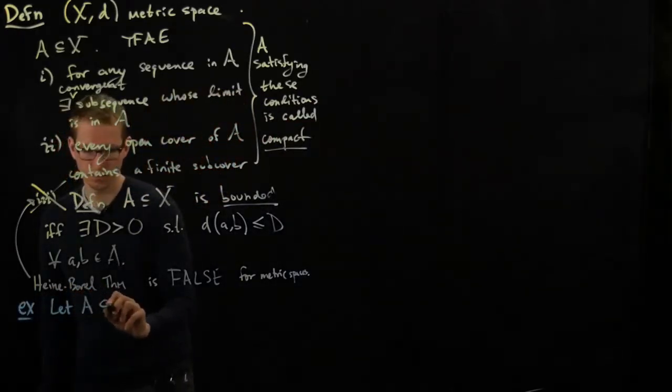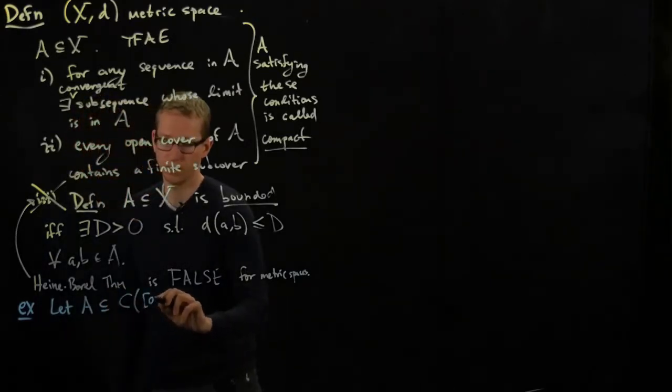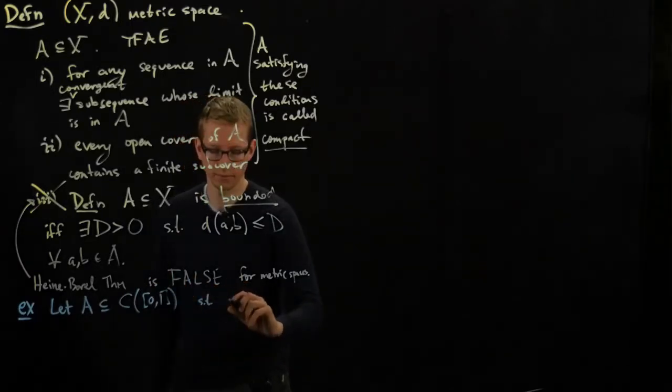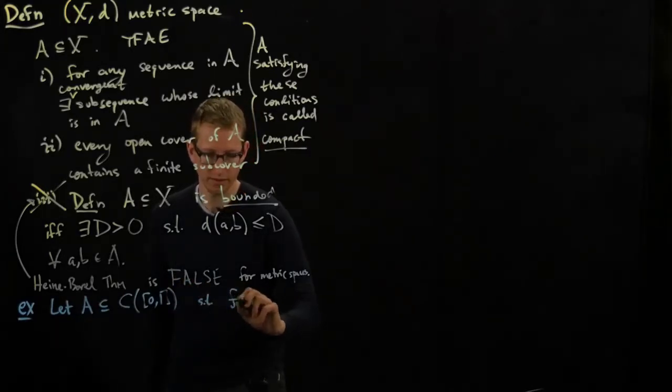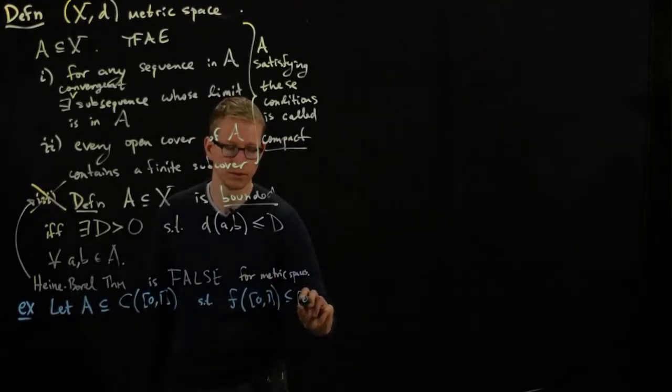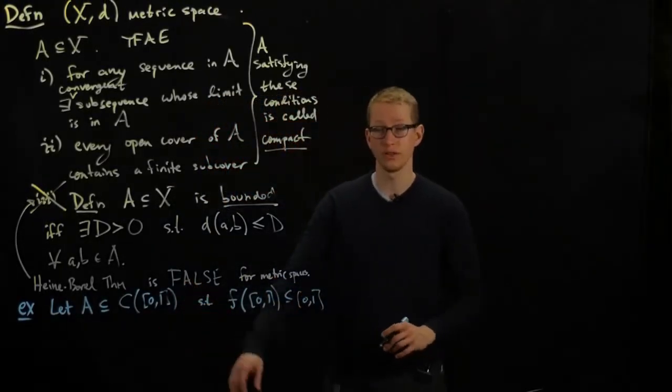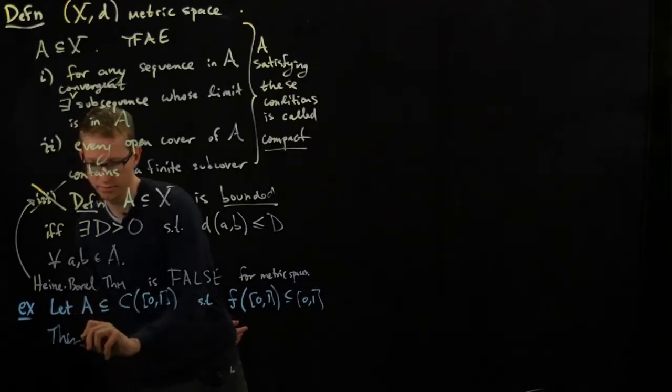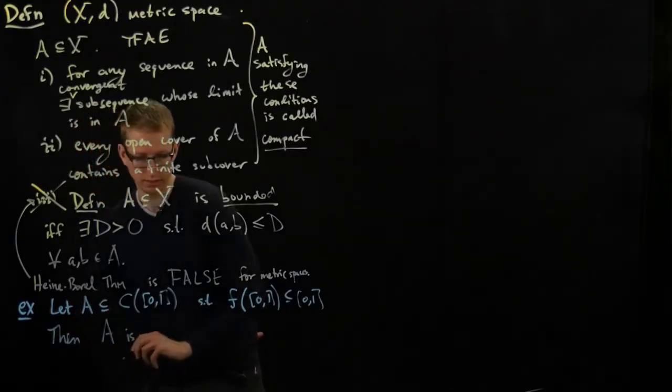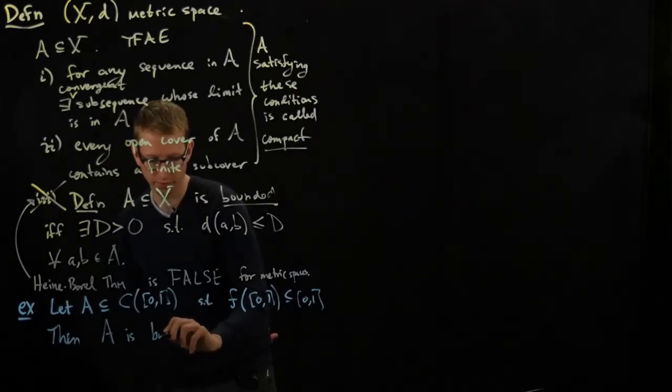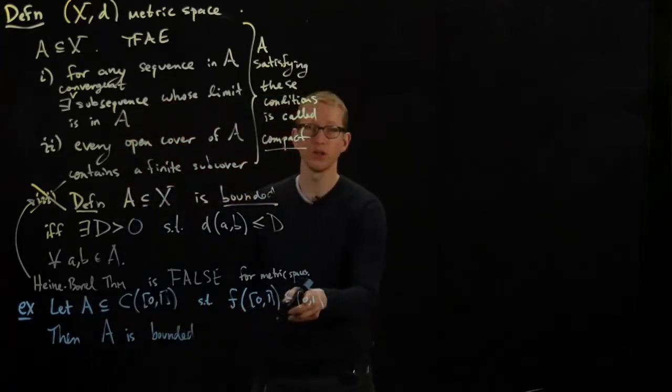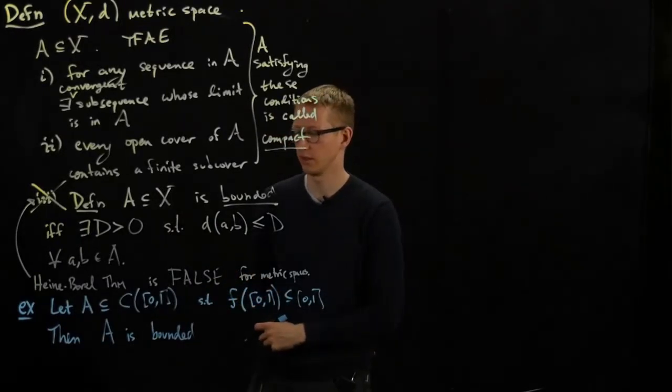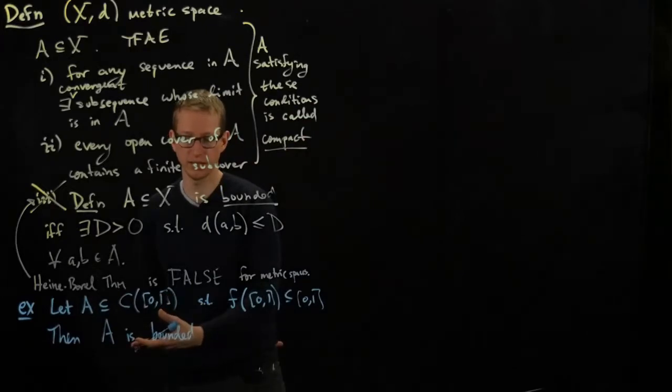Let A be the subset of continuous functions on the unit interval such that f of the unit interval remains in the unit interval. So we can actually draw these functions. I'll give an example in a moment. Then A is actually bounded, and this immediately follows from this definition. And I should tell you with respect to what metric. We've already specified two different types of metrics on this space, one is the sup norm and the other one is the integral norm.